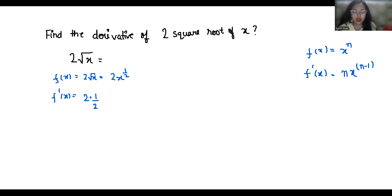Then x^(1/2 - 1). The 2 will cancel out, and it becomes x^(1/2 - 1).